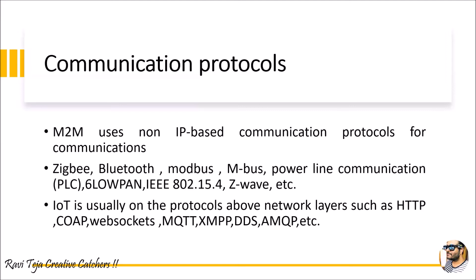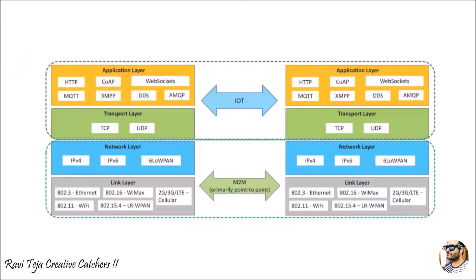Coming to IoT, it is completely software related. IoT mostly communicates at the network layer using protocols such as HTTP, SOAP, WebSockets, MQTT, XMPP, DDS, and AMQP. These protocols are used for the Internet of Things with respect to the network or software layer. We have already discussed these in Unit 1 — please refer to those topics if you are not familiar with them. These protocols are what primarily differentiate M2M from IoT.